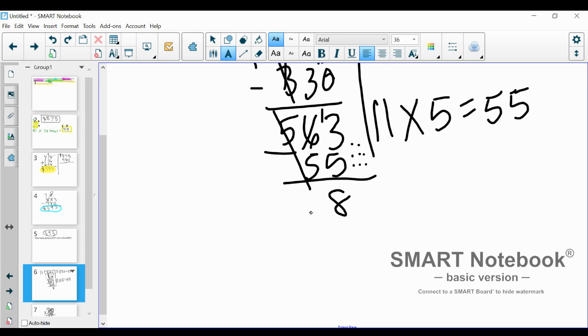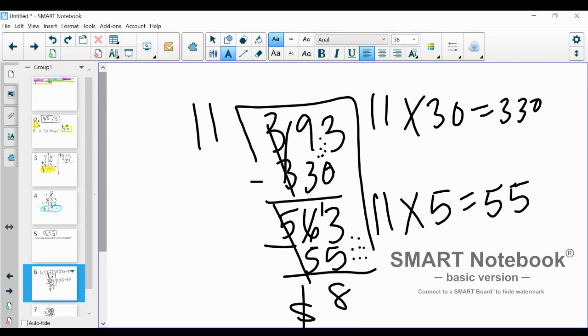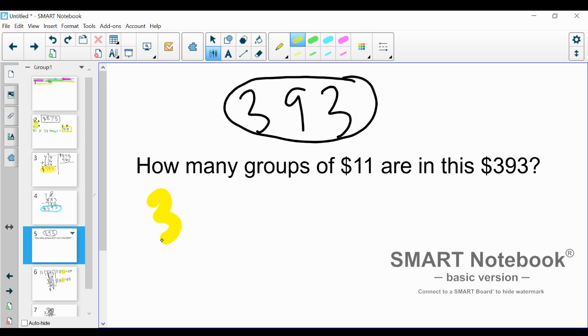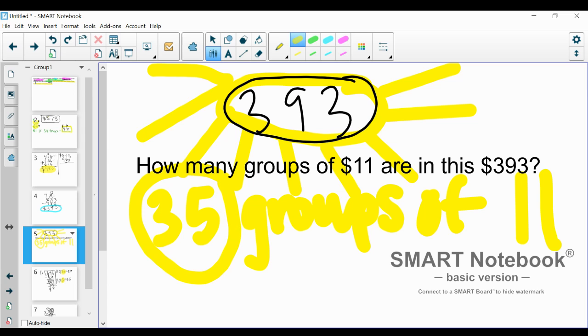So what this means is these numbers right here, this 30 and this 5 here, those are our quotients. That means that 393 broken up into groups of 11 will give us 35 groups. So back over here, there are 35 groups of 11. So if we were to take this number right here and to break it up into groups of $11, we'd have 35 groups. We'd have 35 branches off of this with $11. So he would need to mow a lawn, mow 35 lawns, and get paid $11 each time to earn $393.